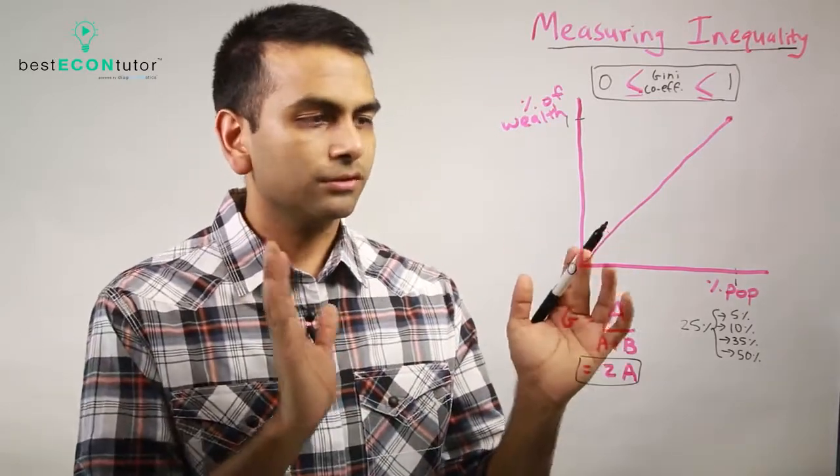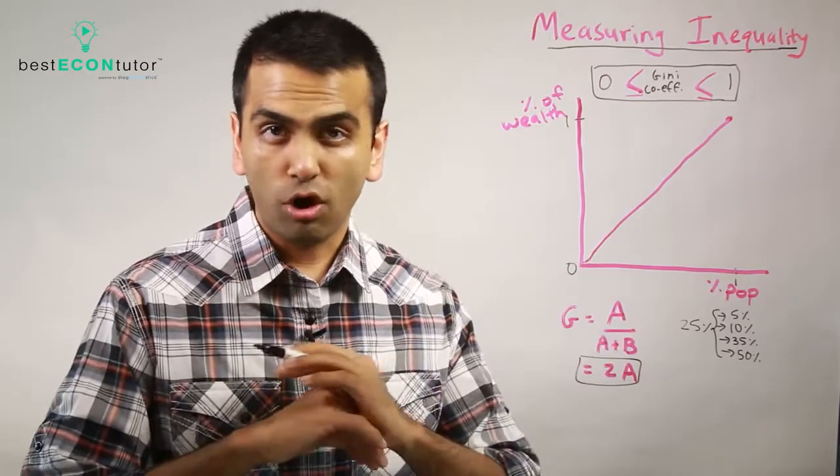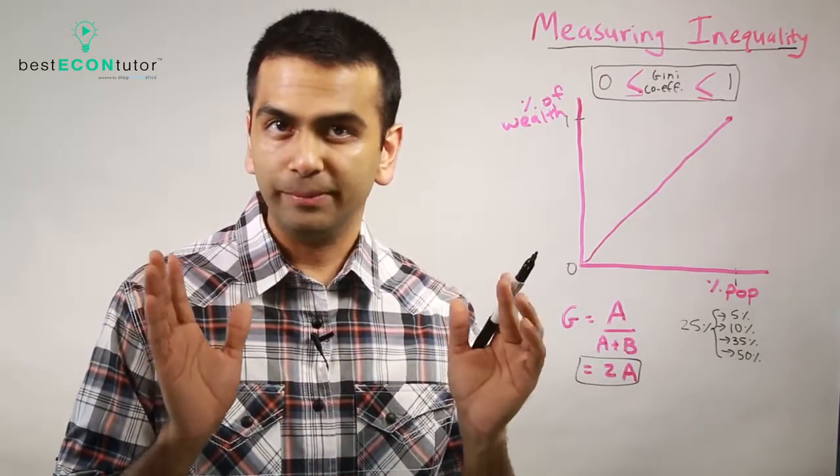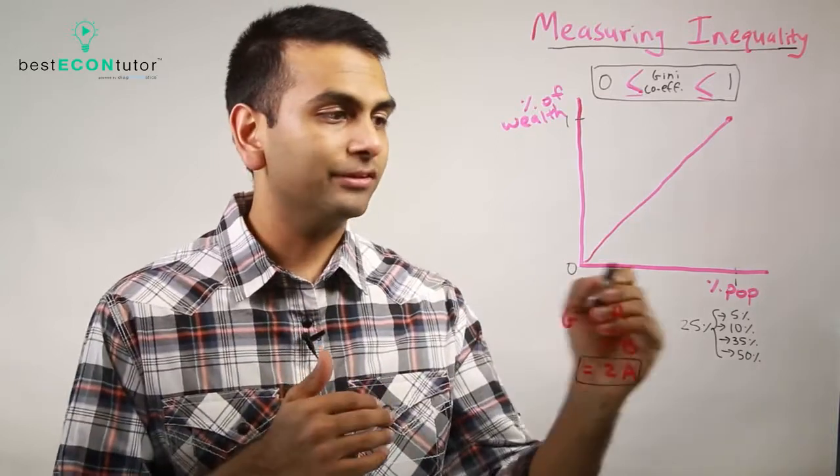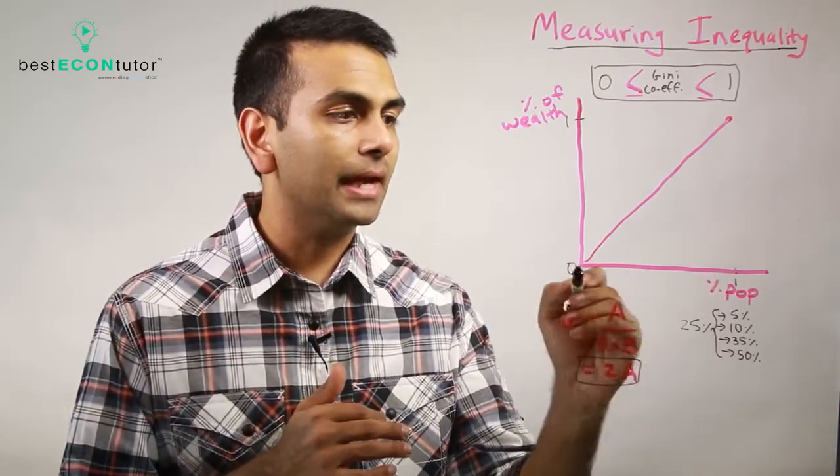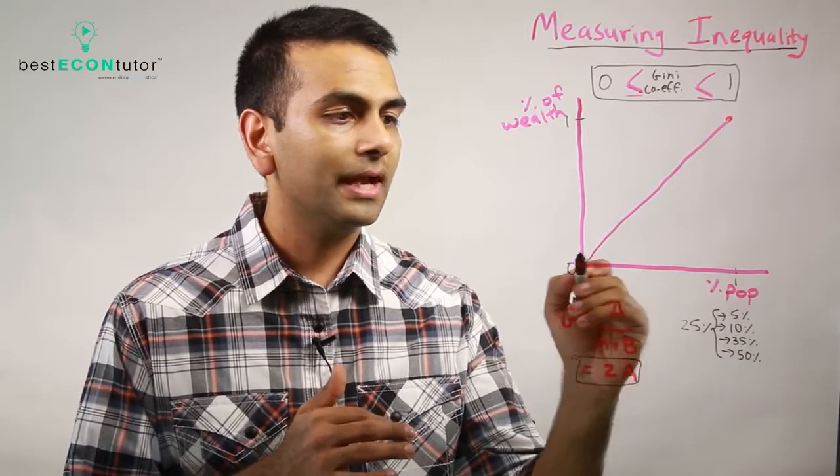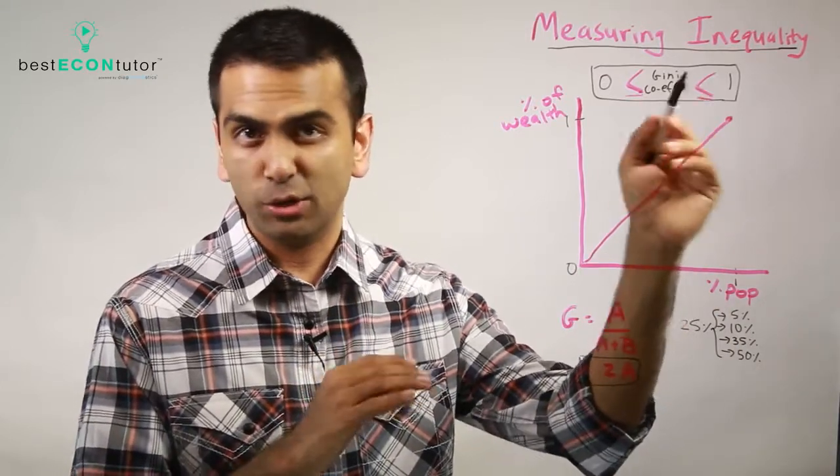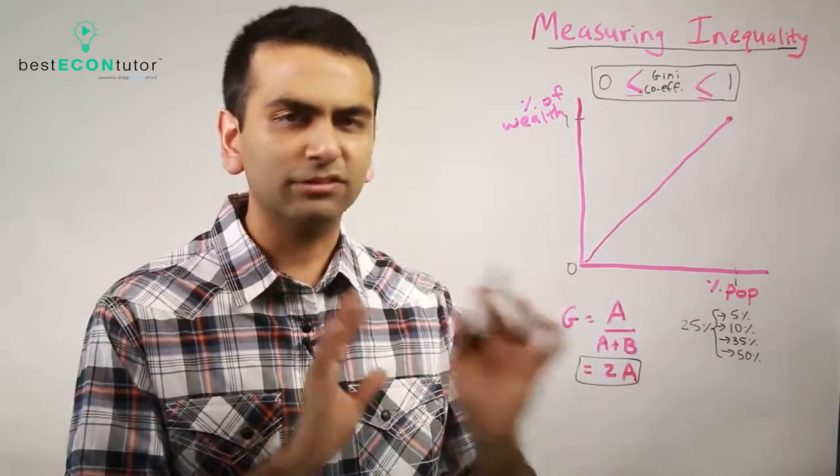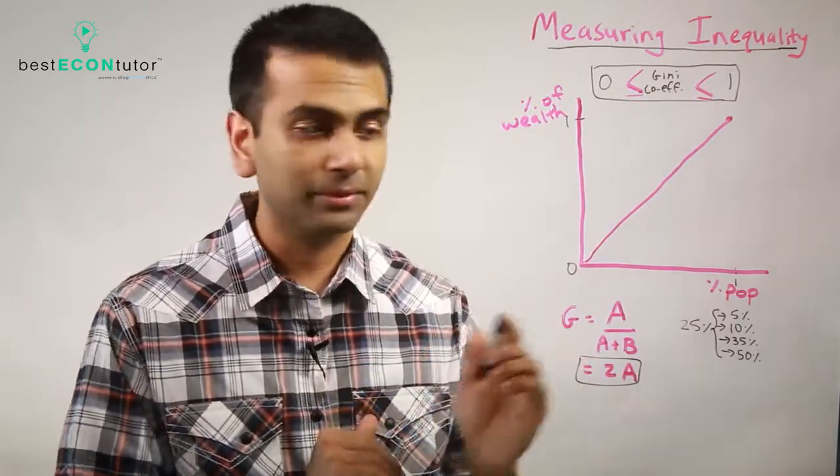Simple example: what if all the wealth in the whole country was with just one person? Well, in that case, even the bottom 99% of the population have no wealth. As we'll see, we're going to get a 100% Gini coefficient in that case. But let's look at a more normal example first.